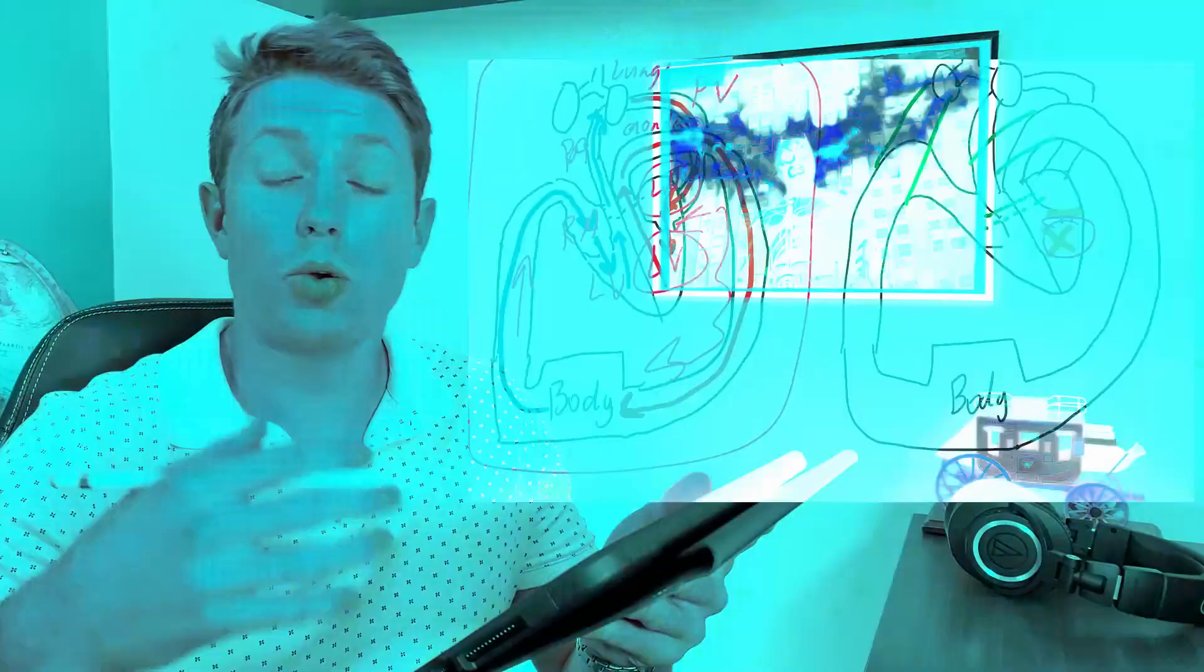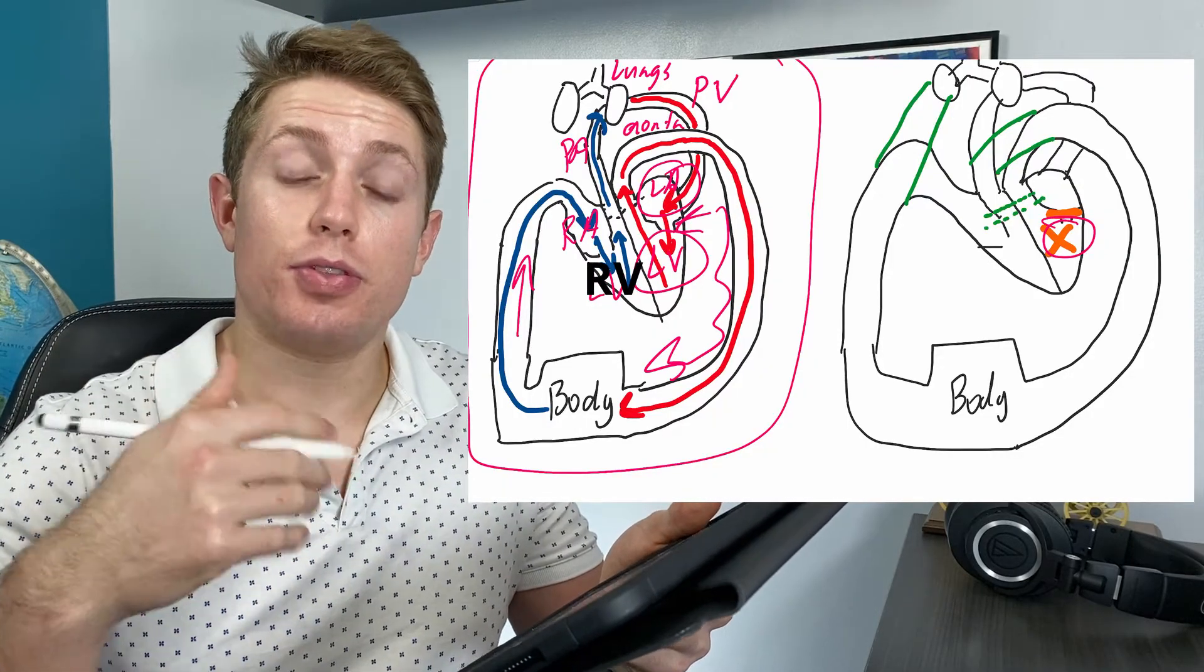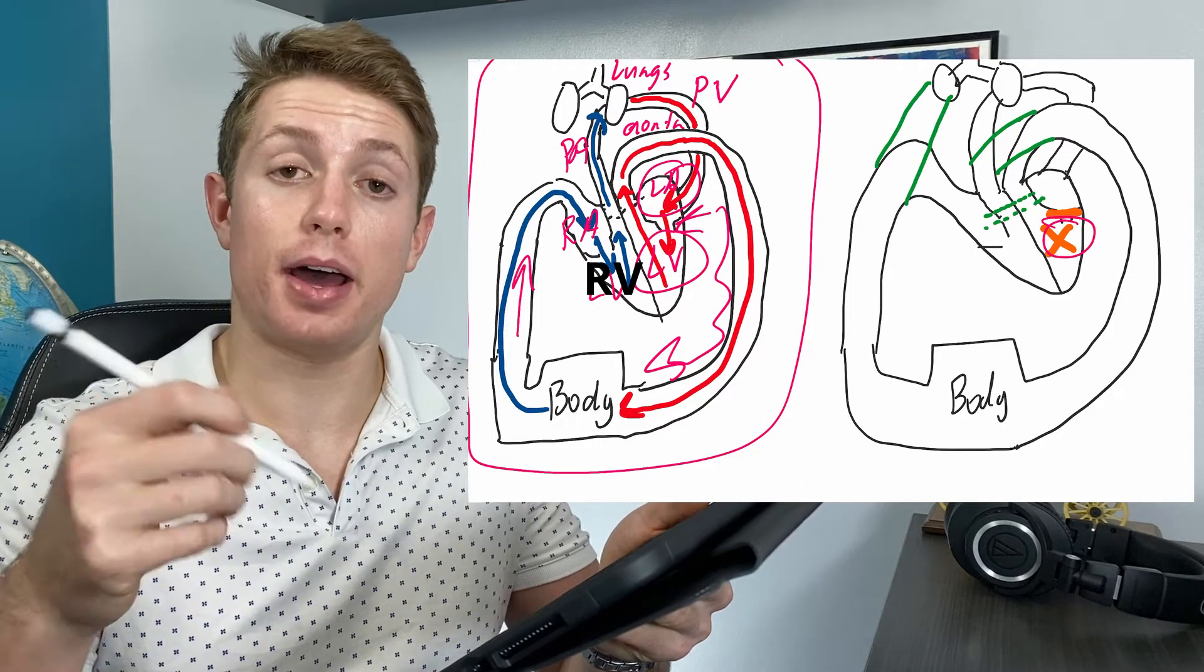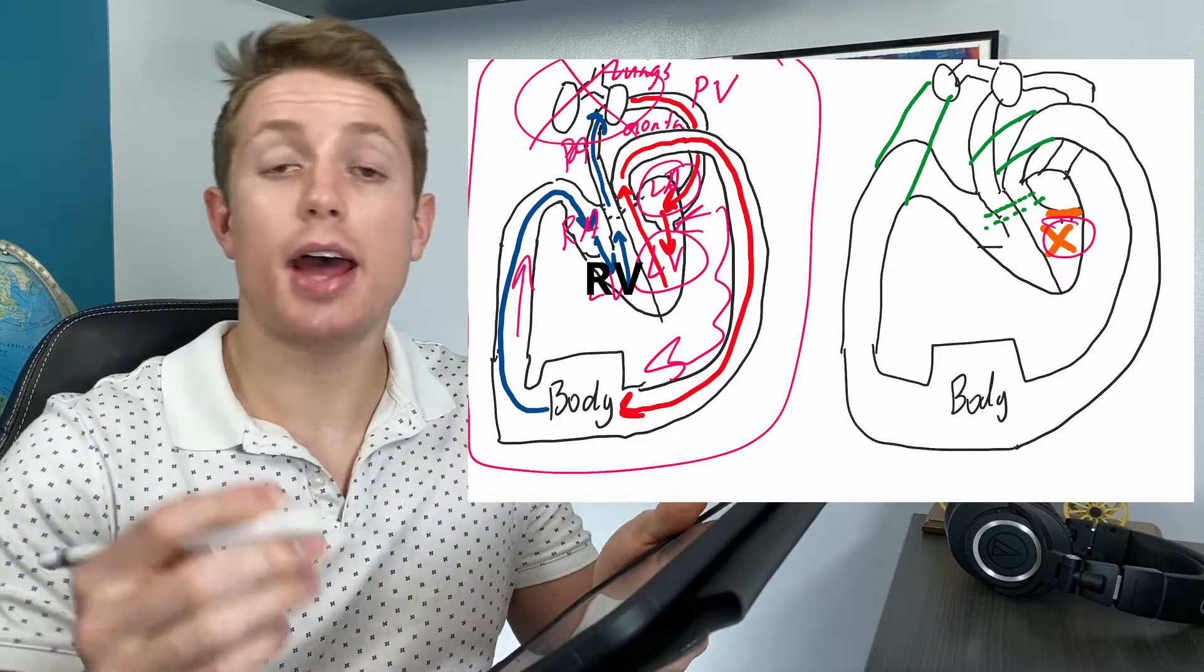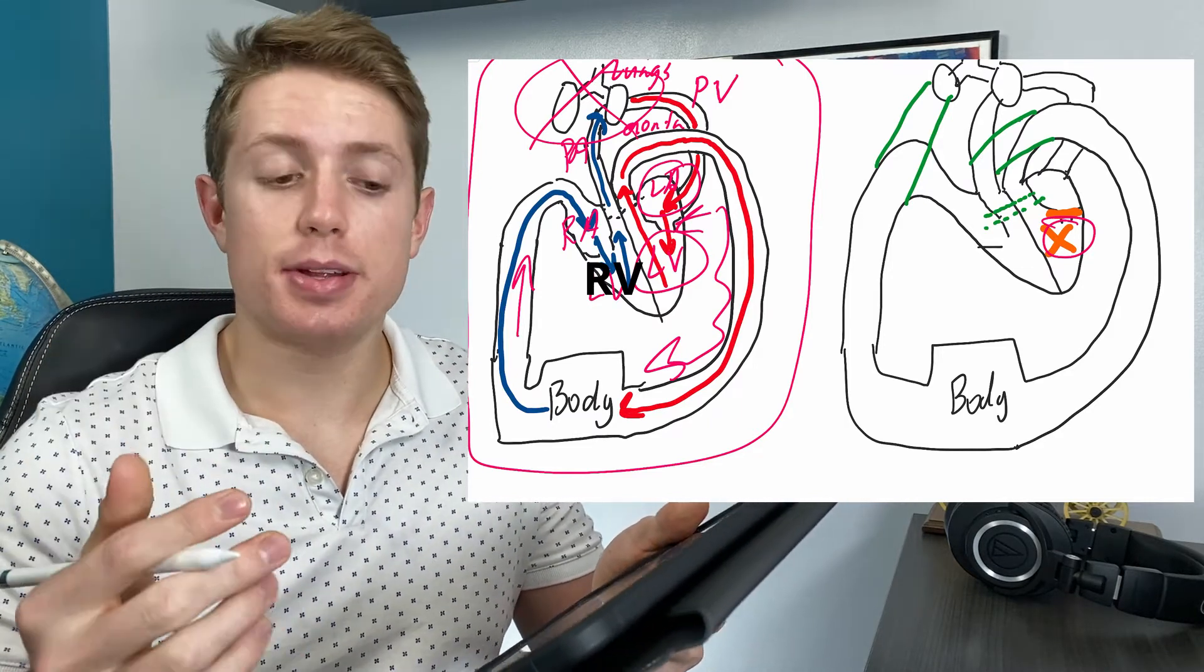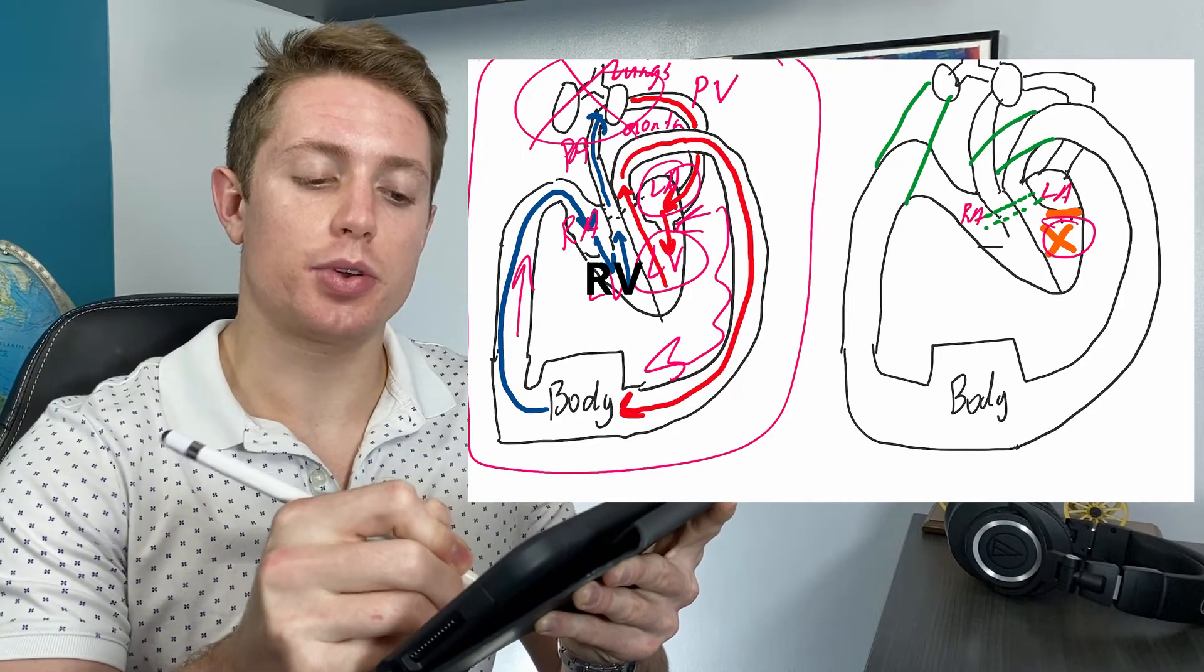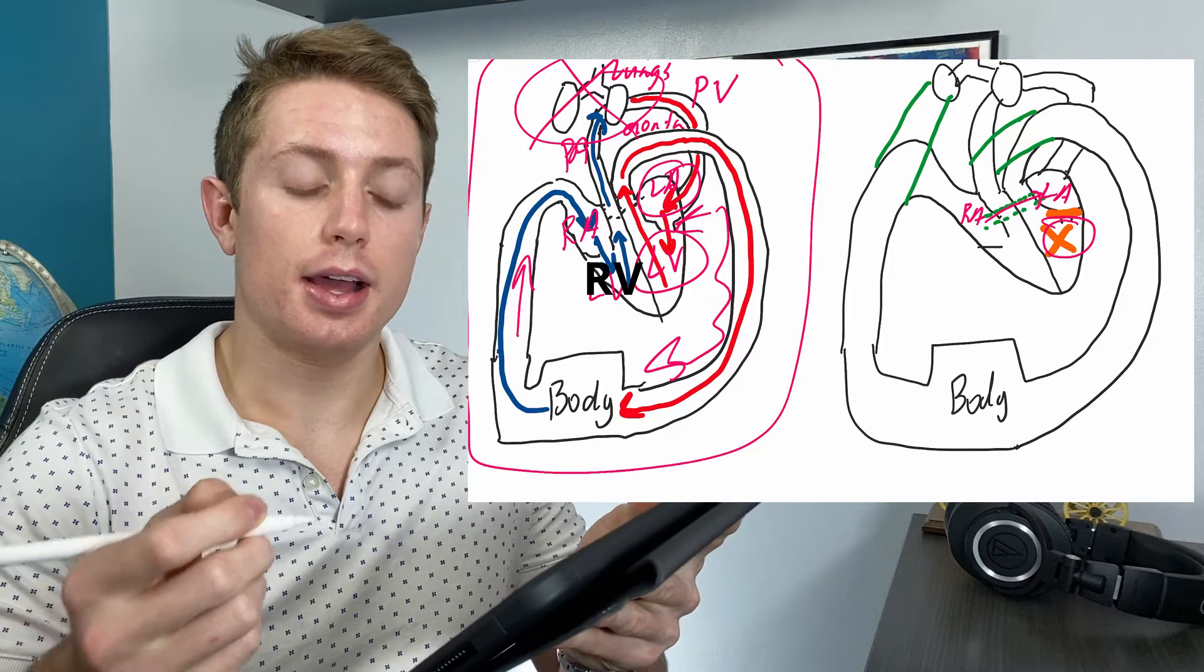Now this left ventricle, which isn't really doing anything, isn't a huge problem when the baby is a fetus. And the reason for that is because blood is not being oxygenated in the lungs, rather it is being oxygenated in the placenta by the mother's blood. So the whole lungs are sort of cut out of the whole circulatory system. And so what instead happens is blood is shunted from the right atrium to the left atrium via something called the foramen ovale.